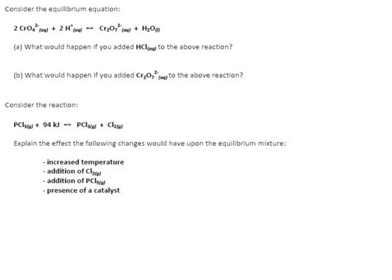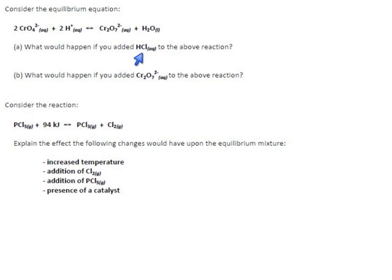We tend to draw arrows when we're solving questions like this. We have chromate and acid reacting to produce dichromate and water. They ask: what happens if you add hydrochloric acid to the above reaction?